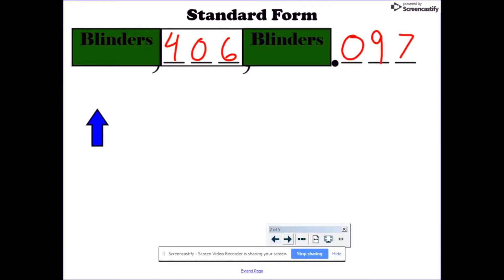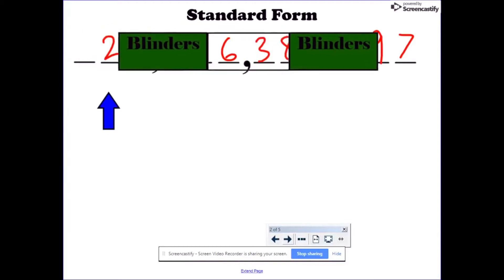406. 406. And its last name is thousand. So it's 406 thousand. And we move on to the next period or family.